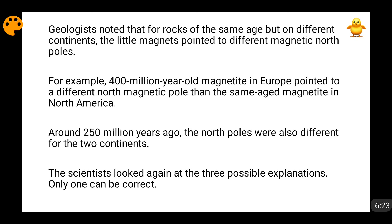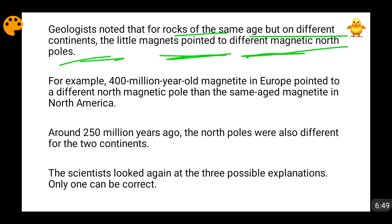Geologists did the same process with rocks on other continents. Moving to Asia — when rocks in India were analyzed, older rocks also pointed to the same location as each other, but it was not the same location as in the case of Africa. Fresh volcanic eruption rocks in any continent will show the same current magnetic north since they are formed now, but rocks formed in older ages on different continents were showing different locations. If they are showing different locations, then in addition to a moving north pole, the orientation of the continents themselves must have also changed.